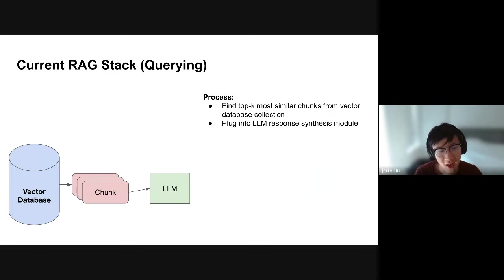This is a nice segue into the sub-question query engine. This query engine will treat different documents differently — we're going to index them separately. You could have them in the same collection in a vector database like Pinecone, Weaviate, or Chroma, but in different namespaces. Regardless, we're going to treat them as slightly different tools — we'll have a Lyft index and an Uber index.